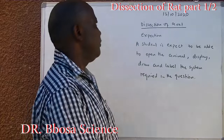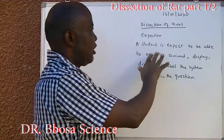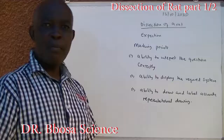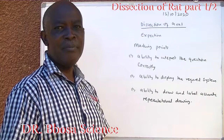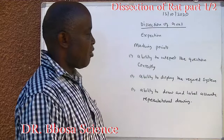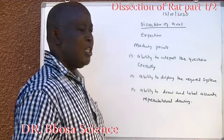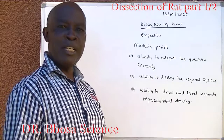Today we are going to look at the dissection of a rat. The examiner expects a student to be able to open the animal, display, draw and label the system required in the question. Marking points are needed to interpret the question correctly. Even if a student dissects but does not display what the question requires, it does not get any marks. The ability to display the required system and then draw and label an accurate representational diagram is essential.